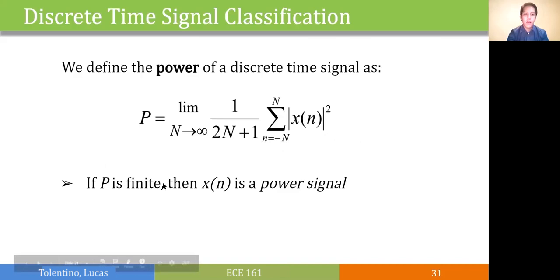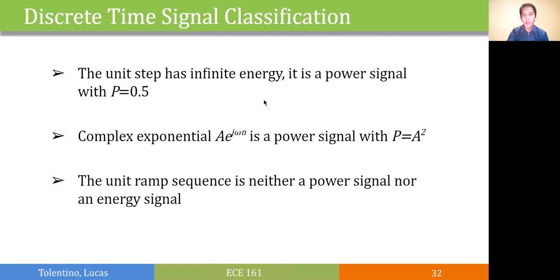For the unit step, if we get the average power for all time, we get that the average power is 0.5. A complex exponential ae to the j omega n can be classified as a power signal since this oscillating function has infinite energy but has an average power computed as a squared. The unit ramp, since it is always increasing, both the average and the sum of the squares are infinite, so it is neither a power signal nor an energy signal.